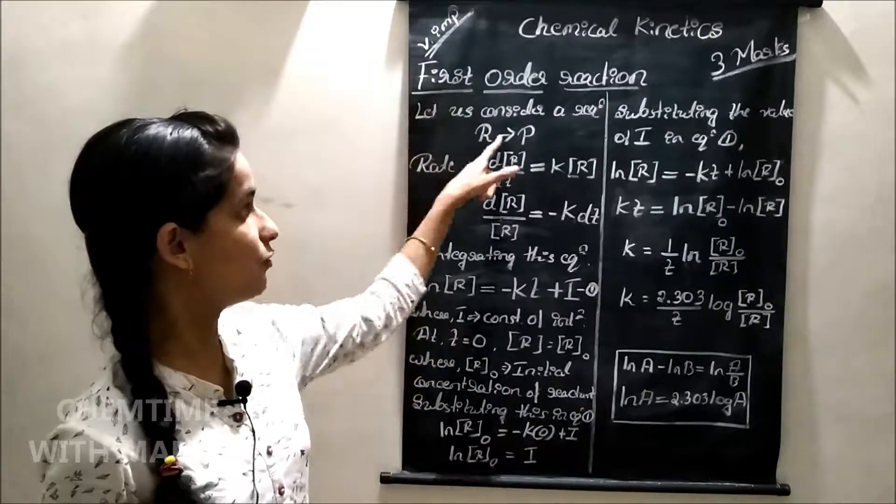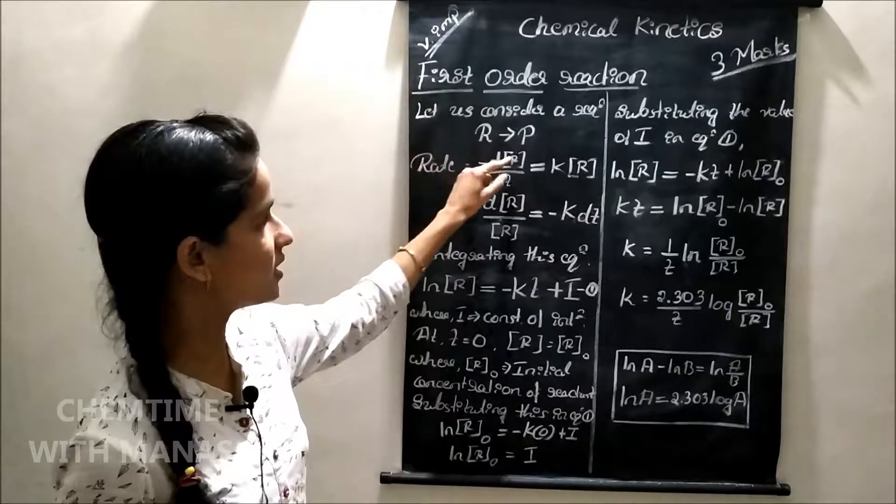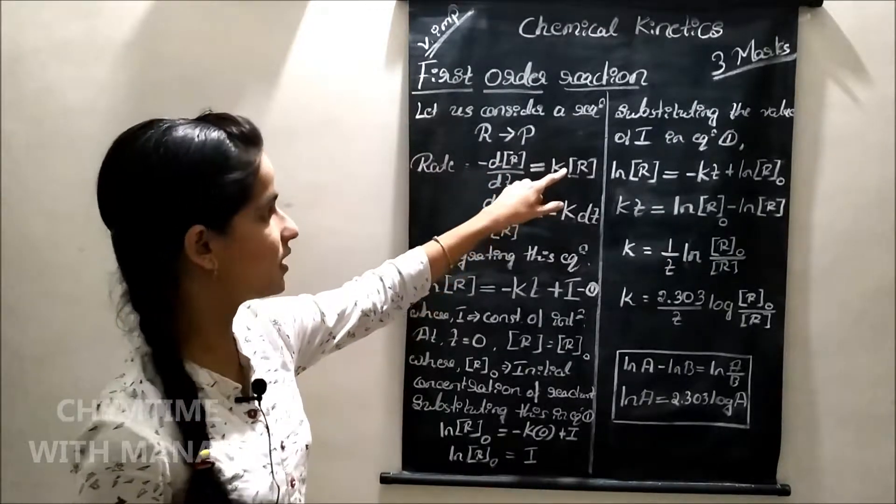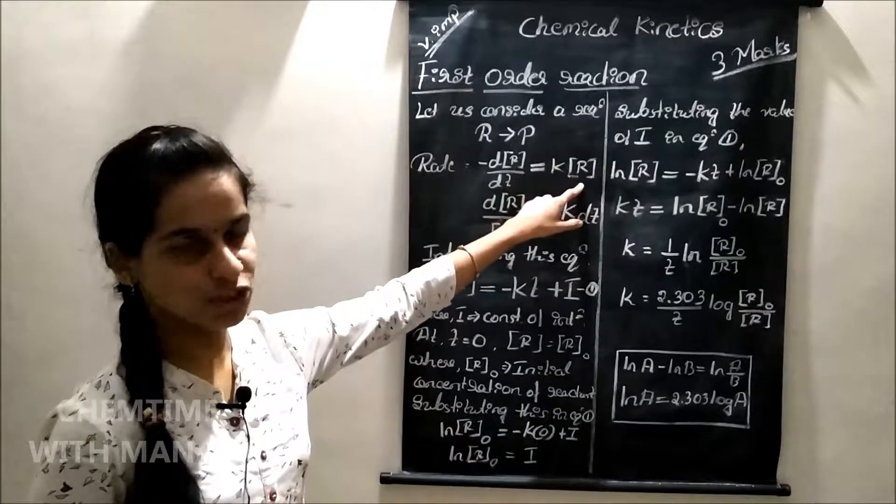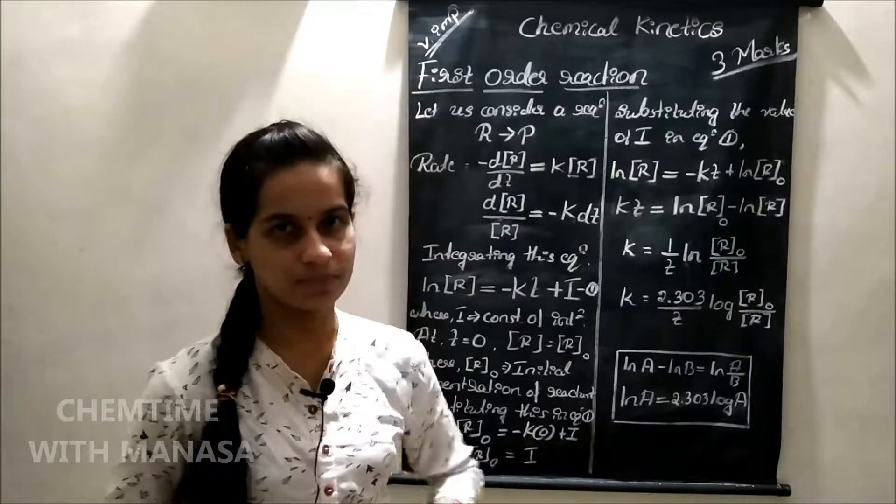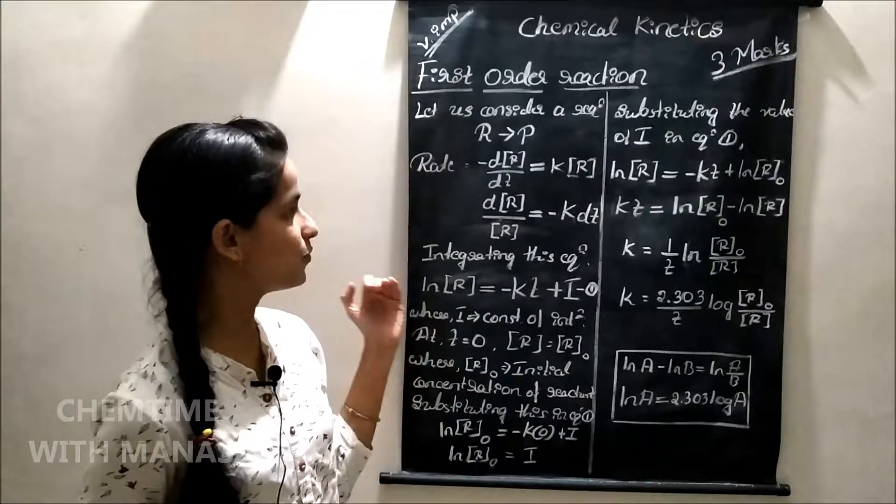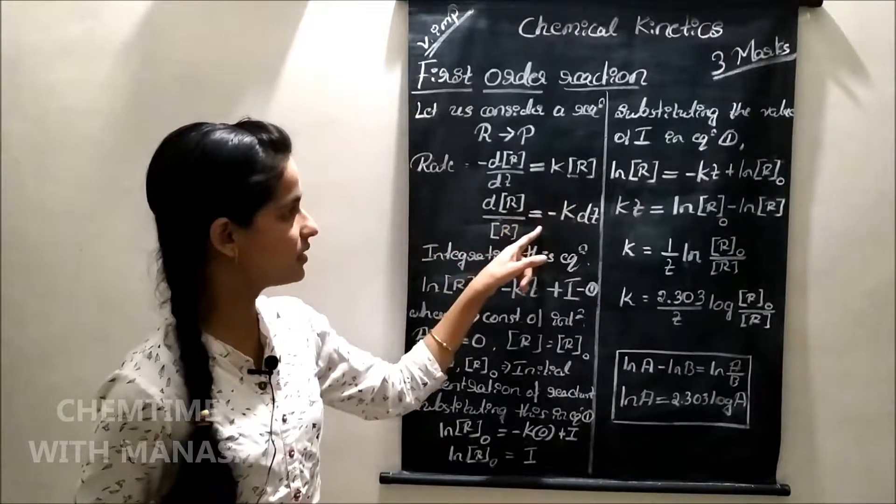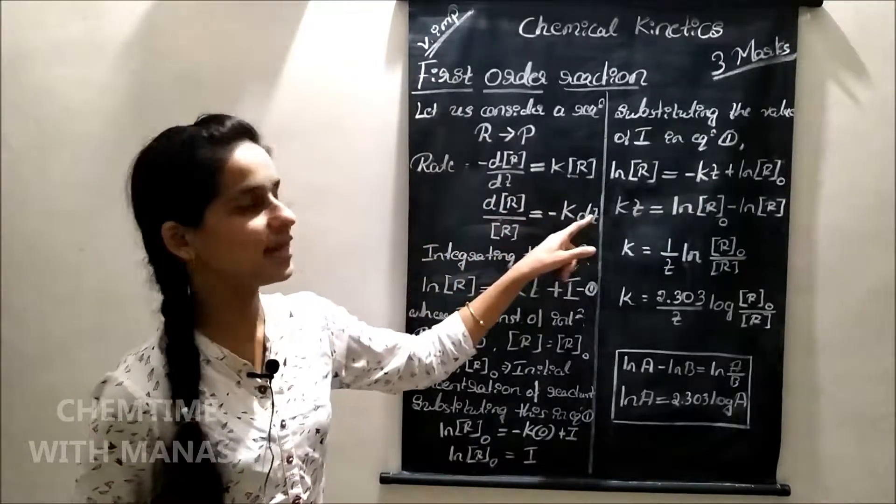Let us write the rate of this reaction that is minus dR by dt is equal to rate constant K into concentration of R to the power 1. On rearrangement, we get dR by R is equal to minus K dt.